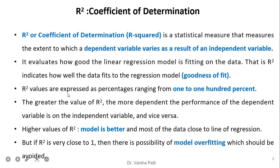R-square values are expressed as a percentage ranging from 1 to 100%. The greater the value of R-square, the more dependent the performance of the dependent variable is on the independent variable and vice versa. A higher value of R-square means the model is better and most of the data are close to the line of regression. But if R-square is very close to 1, then there is a possibility of model overfitting, which can be avoided.